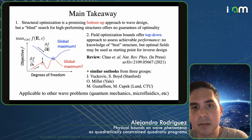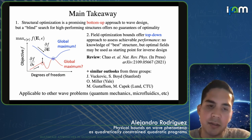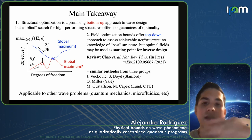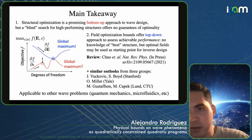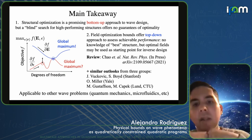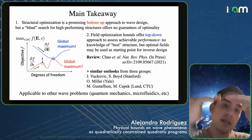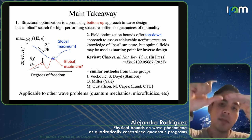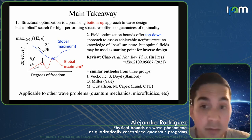What's really neat about these QCQP techniques is that field optimization bounds now offer a top-down approach to assess achievable performance. There's not yet a way to guarantee the bounds are tight, even in the limit of infinite discretization, and they don't give you knowledge of the best structures out there.